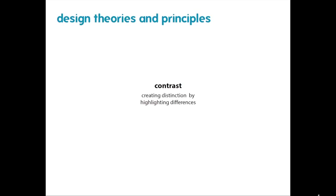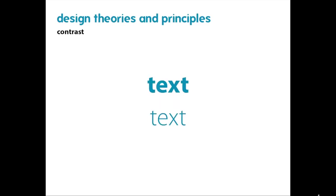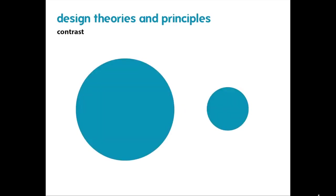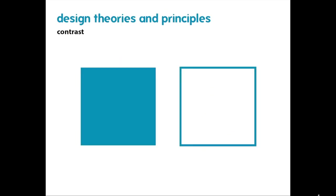Contrast is the concept of creating distinction by highlighting differences. These differences can take many forms: different weights of text such as bold versus light, different shaped objects, a big object versus a little one, or even color — something full versus something empty. By using contrast, you allow objects to become highlighted, so our eye immediately recognizes that two things are different without needing any words or text to communicate that idea.